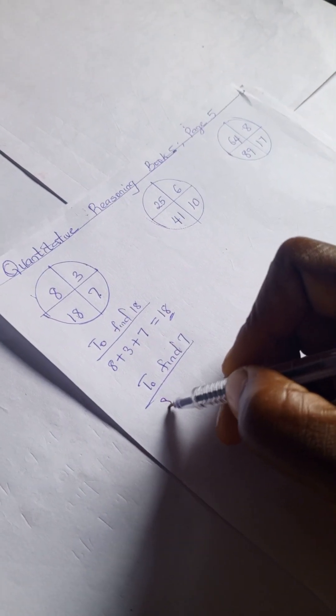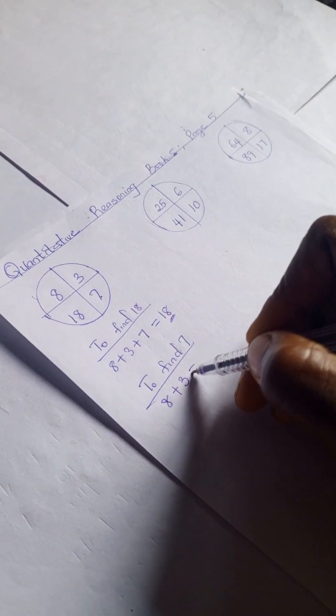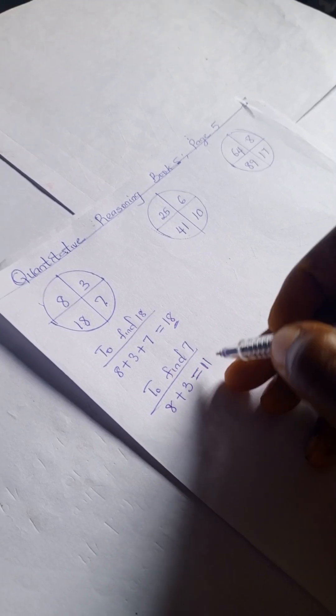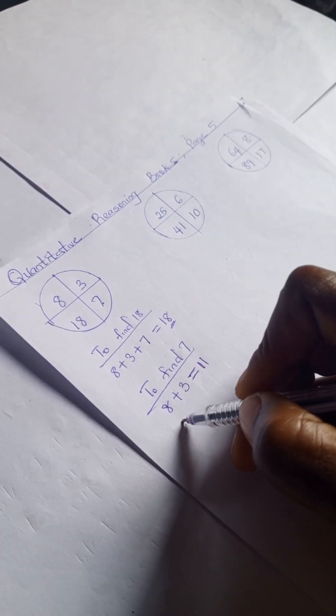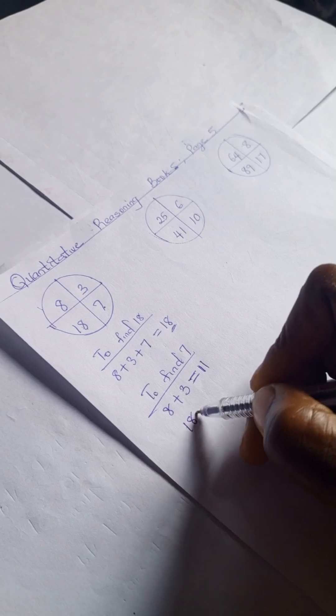We're going to have 8 plus 3, which gives us 11, right. And 18 minus 11.